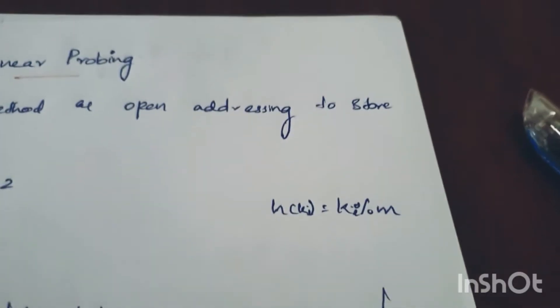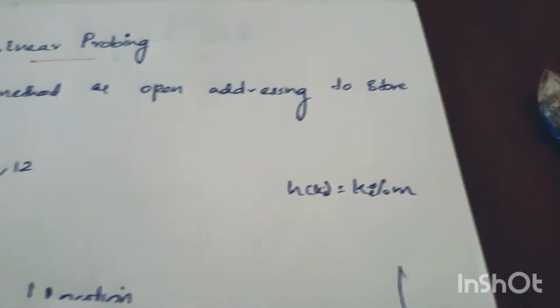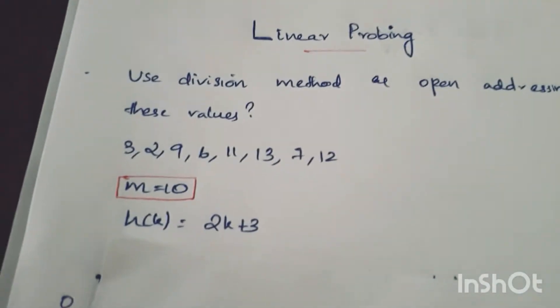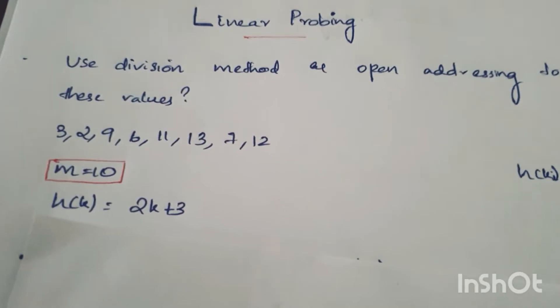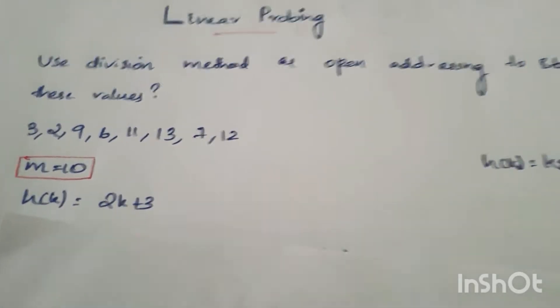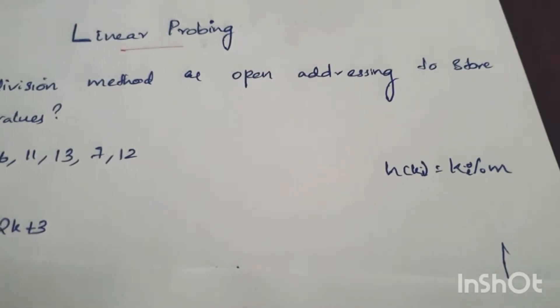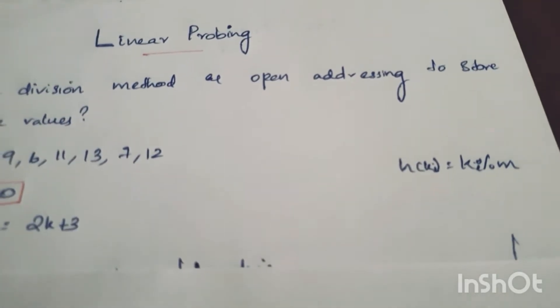Now, in this place, we will replace 2k plus 3. We will solve the index and store it in the hashtable.